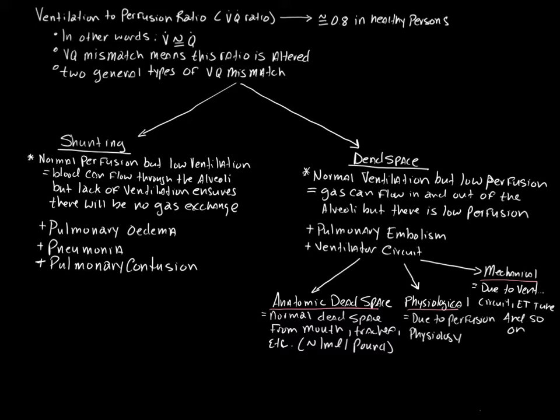Okay, so this is just a continuation from the other day. Remember when we talked about the ventilation to perfusion ratio, what we call the VQ ratio? We said generally it's around 0.8 in healthy people.